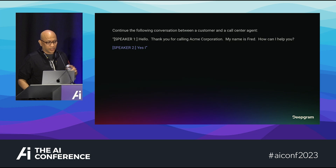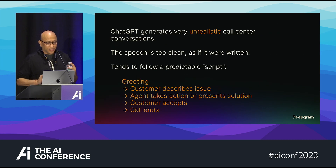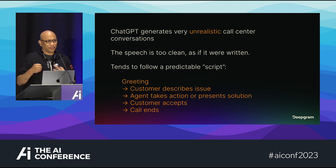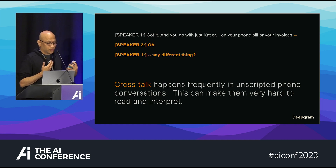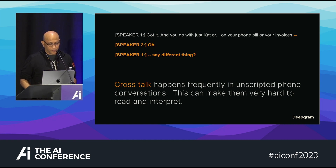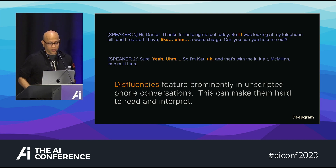We compared a large language model and a task-specific model. We gave an LLM a prompt, and it did a really good job of filling in a conversation summary — but the TLDR is it's an unrealistic summary: customer describes issue, agent presents solution, customer accepts, call ends. That's not how real calls work. In reality, there's crosstalk — one person says something, the other interrupts. You have to deal with crosstalk during transcription and response. Disfluencies also happen — a cough, for example — and these make it hard to read and interpret the generated transcription.